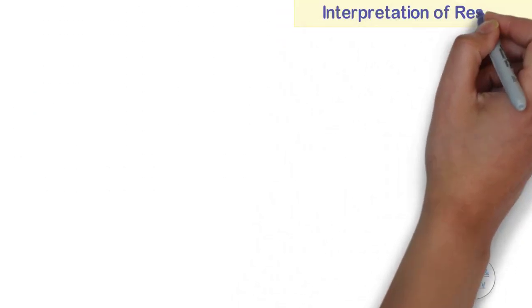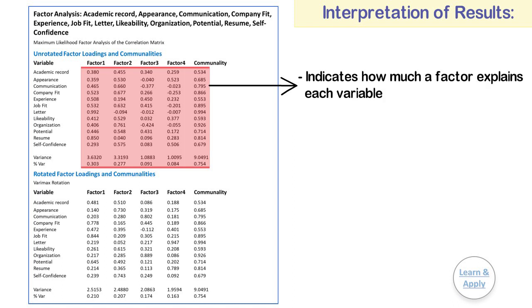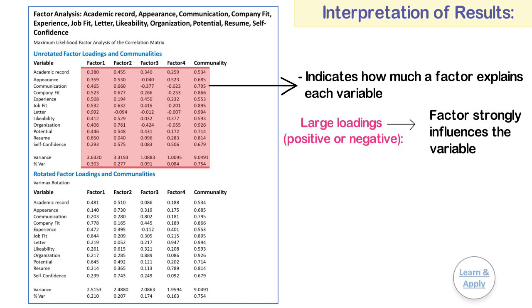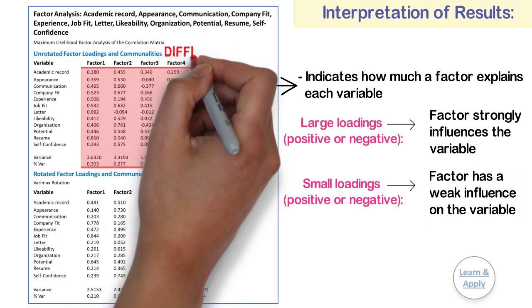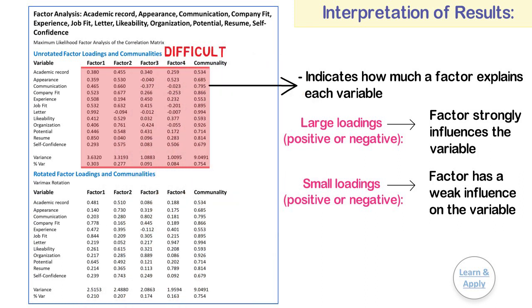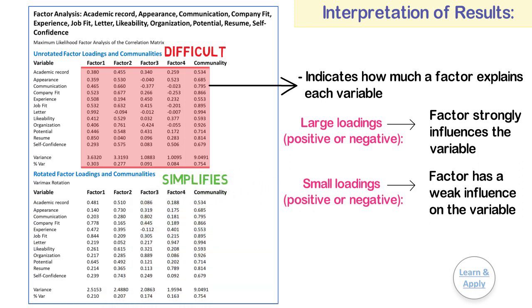Interpretation of results. Minitab calculates the factor loadings for each variable in the analysis. The loading indicates how much a factor explains each variable. Large loadings, either positive or negative, indicate that the factor strongly influences the variable. Small loadings indicate a weak influence. Unrotated factor loadings are often difficult to interpret. Factor rotation simplifies the loading structure and makes the factor loadings easier to interpret.